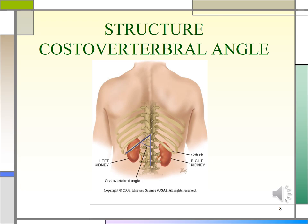The costovertebral angle is the angle formed on either side of the spinal column, between the last rib (the twelfth rib) and the lumbar vertebrae. Use the heel of your closed fist to strike the patient firmly over the costovertebral angles. Pain at this site indicates perirenal inflammation. Do not do this if the patient is known to have pyelonephritis or a kidney stone, as you will elicit a very painful response that will reverberate for many hours.